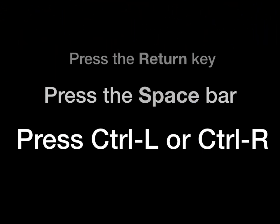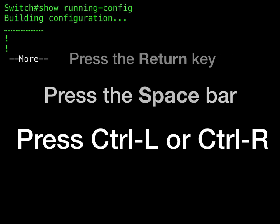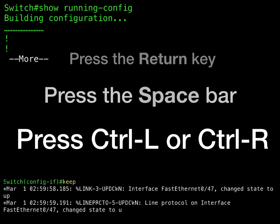Scroll down a line or screen on displays that are longer than the terminal screen can display. The More Prompt is used for any output that has more lines than can be displayed on the terminal screen, including show command output. You can use the return and space bar keystrokes whenever you see the More Prompt. Press the return key to scroll down one line, or press the space bar to scroll down one screen. Press Ctrl L or Ctrl R to redisplay the current command line if the switch suddenly sends a message to your screen.